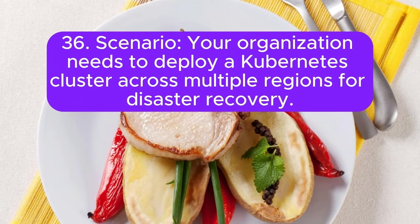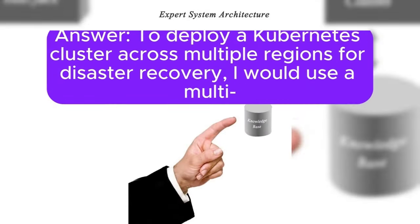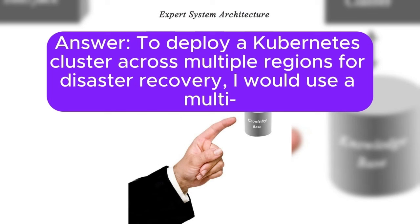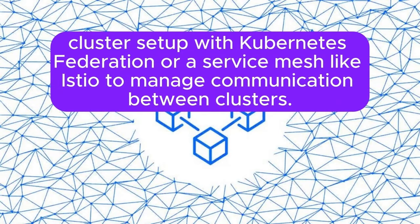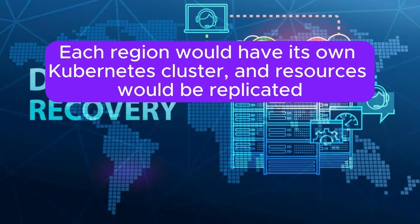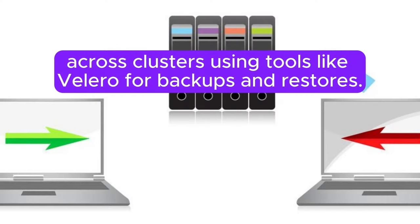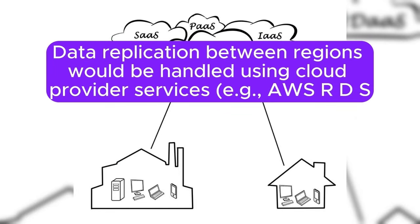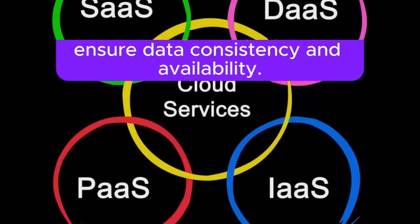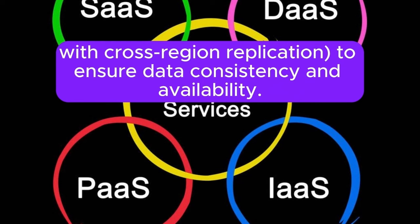Scenario 36: Your organization needs to deploy a Kubernetes cluster across multiple regions for disaster recovery. Answer: I would use a multi-cluster setup with Kubernetes federation or a service mesh like Istio to manage communication between clusters. Each region would have its own Kubernetes cluster, and resources would be replicated across clusters using tools like Velero for backups and restores. I would configure DNS with global load balancing to route traffic to the nearest or healthiest cluster. Data replication between regions would be handled using cloud provider services, for example AWS RDS with cross-region replication, to ensure data consistency and availability.